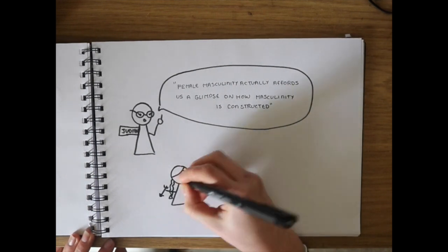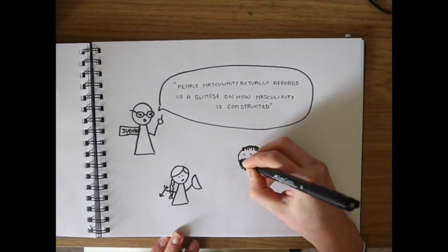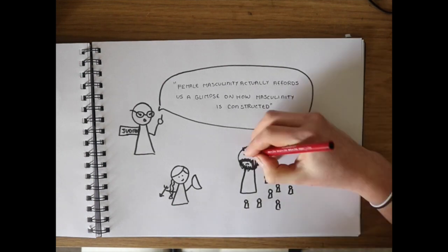Katniss's biggest opponent is President Snow, a strong male character who holds power and authority over thousands. Katniss still conquers him.